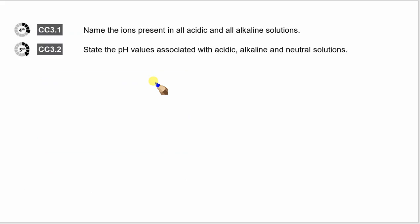We've covered those learning outcomes. We know we've got hydrogen ions and hydroxide ions in acid and alkaline solutions, and we know the values from 0 to 14. 7 is neutral, 8 to 14 is alkaline, and acids go from 0 to 6.